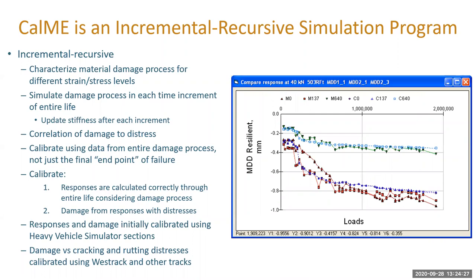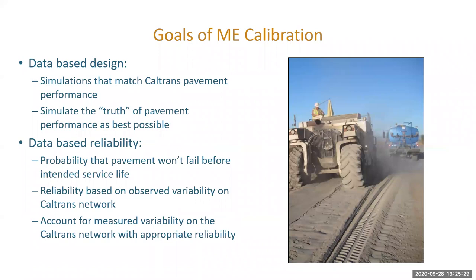We're using a program developed here called CalME — some people pronounce it 'calm-ee.' It's an incremental recursive simulation program that actually simulates the entire damage process, including aging and damage and other things going on, so we get a time history of damage in the pavement which we then correlate with distress. Our response and damage calculations have been calibrated primarily using accelerated pavement testing with heavy vehicle simulators, and further checked under different traffic speeds using the WesTrack APT data and some data from the National Center for Asphalt Technology and MnROAD. The next step is empirical transfer functions that relate damage to distress.